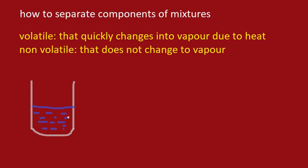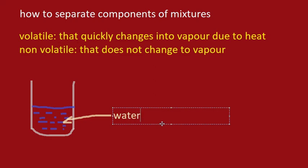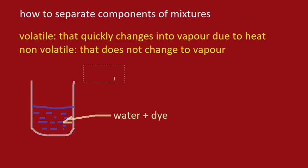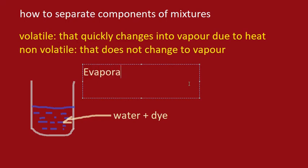So we can say that ink consists of the volatile substance, which may be water, and also the non-volatile substance, which may be the dye of the ink that gives it its color. So if we want to separate this water from this dye, then the process that we normally adopt is evaporation.